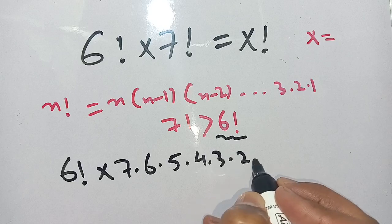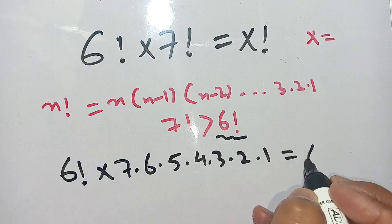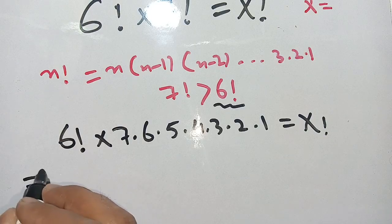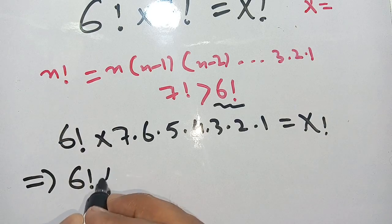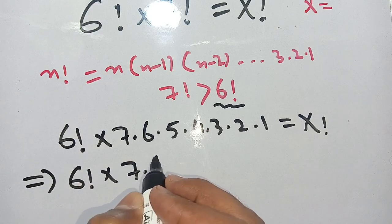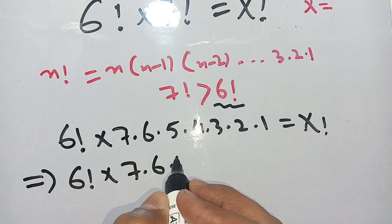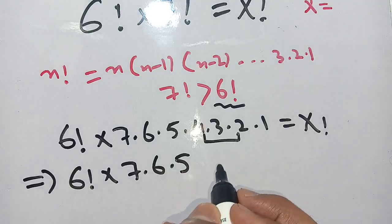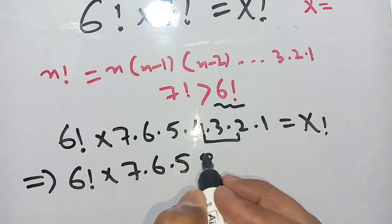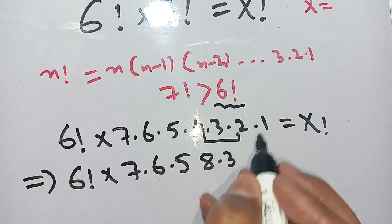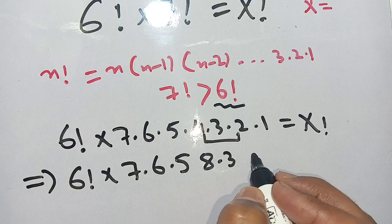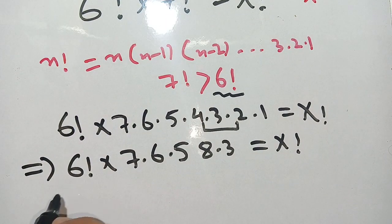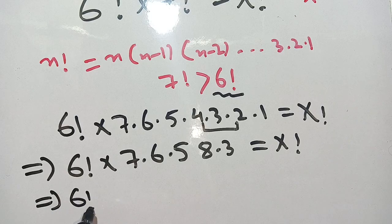Times 2 times 1, equal to x factorial. In the next step we can write this as 6 factorial times 7 times 6 times 5, and when we multiply 4 times 2 it becomes 8, and 3 times 1 it becomes 3, equal to x factorial.